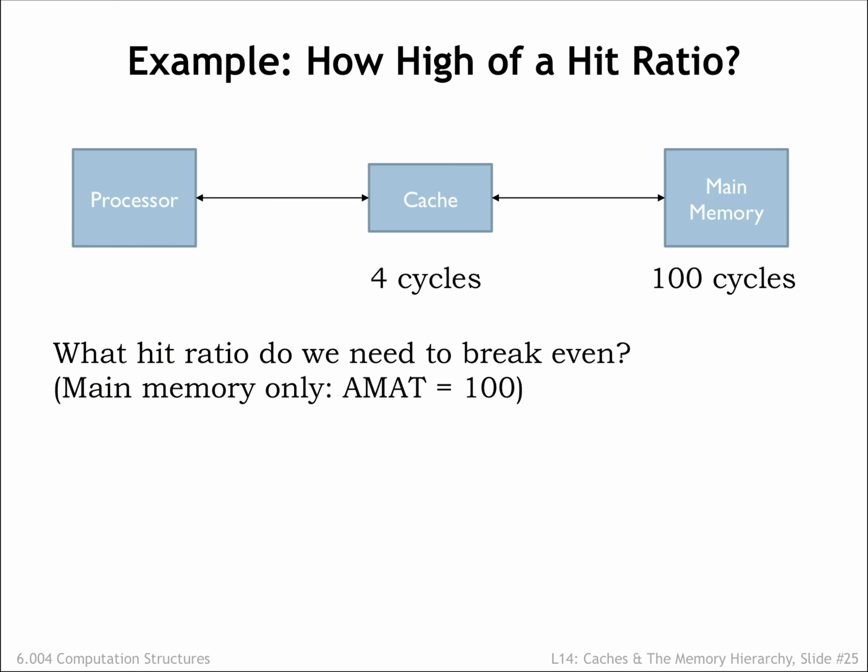Let's try out some numbers. Suppose the cache takes 4 processor cycles to respond and main memory takes 100 cycles. Without the cache, each memory access would take 100 cycles. With the cache, a cache hit takes 4 cycles and a cache miss takes 104 cycles. What hit ratio is needed so that the average memory access time with the cache is 100 cycles, the breakeven point? Using the average memory access time formula from the previous slide, we see that we only need a hit ratio of 4% in order for our memory system of the cache plus main memory to perform as well as main memory alone. The idea, of course, is that we'll be able to do much better than that.